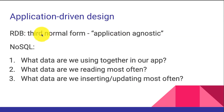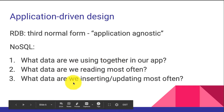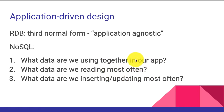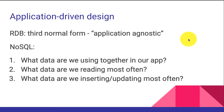In SQL and relational databases, we generally set up third normal form in order to be application-agnostic — we want data that any application can use and any developer can understand. But with NoSQL, before you even start designing your database, you have to ask yourself: What data are we using together in our app? What data are we reading most often? And what data are we inserting and updating most often? These are the critical questions before you design your schema. It's use-driven — how am I going to use my data?